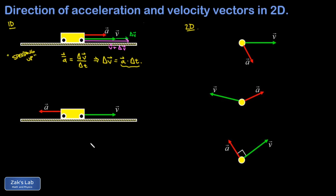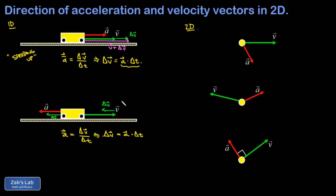In the second case, I have an acceleration vector opposing the direction of the velocity vector. Solving for delta v as a times delta t, the change in velocity points in the same direction as a, which is to the left — opposite the direction of the original velocity vector. When I vector-add these two things, putting the tail of delta v on the head of v, the resulting vector is shorter than the original v. So the object is slowing down. Whenever the acceleration vector points opposite to the velocity vector, you're looking at an object that's slowing down.